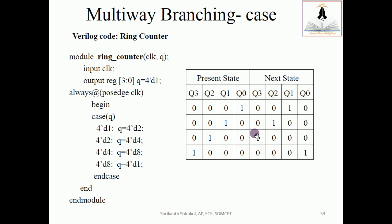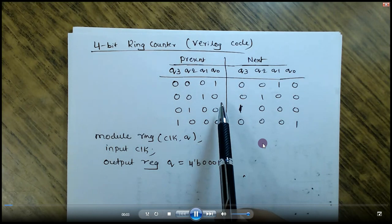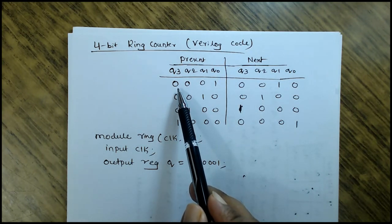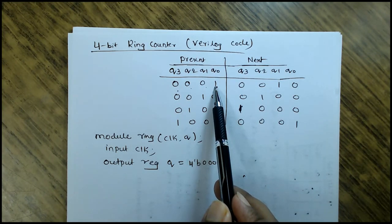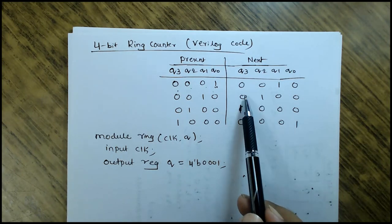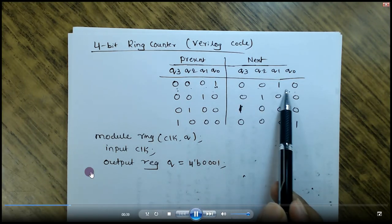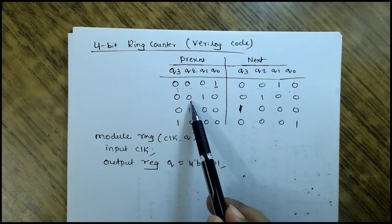Let us have a look at how to write code for the ring counter. In the 4-bit ring counter truth table we have 4 bits of output, wherein the initialization of the 4-bit output is done as 0001. When the clock's positive edge occurs it has to be shifted either to the right or left — here I have preferred left shift. Once it is left shifted, the output 0010 should be allotted to this case. When the 0010 case appears, during the next positive edge it should be shifted by once to the left.